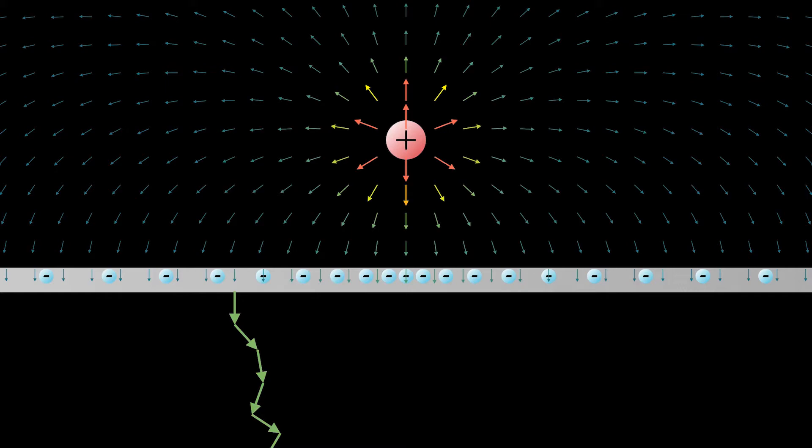Well the only charge it can end on is somewhere on the plate, but that doesn't make any sense, as the potential is decreasing all along the path. And if it ends at infinity, it again doesn't make sense, as the plate must be at the same potential as infinity, since it extends out to infinity, but the path is of decreasing potential.